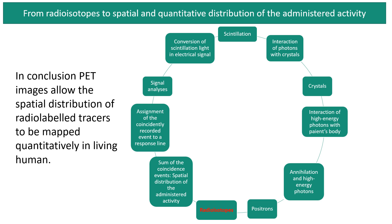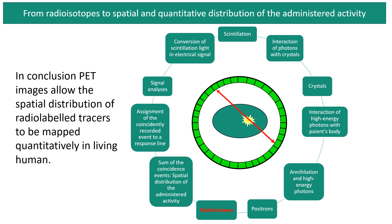From radioisotopes to the spatial and quantitative distribution of the administered activity, many steps are performed sequentially. PET is based on the use of radioisotopes that emit positrons. Through annihilation, the positron energy and mass together with the mass of an atomic electron is converted into the energy of two photons, each with an energy of 511 keV. The two photons may or may not interact with the patient body before impacting on crystals. Interaction with the crystals produces scintillation light that is converted into electrical signals. Only coincidence events are used, and to each coincidence event a line of response is assigned. Finally, the sum of events leads to a spatial distribution of the administered activity in the patient body.